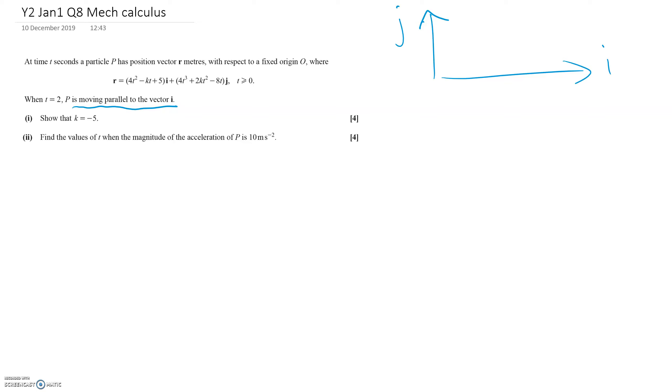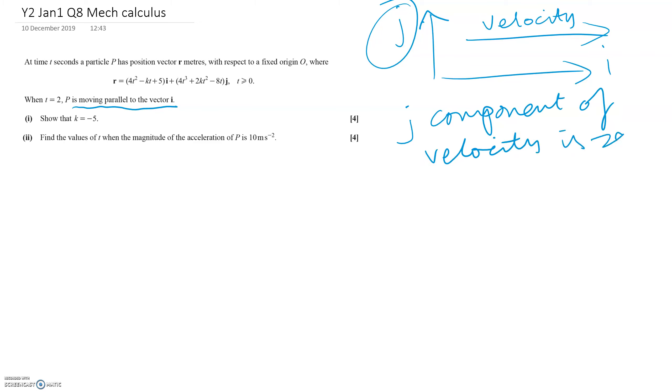In other words, its velocity is in this direction, which means the velocity has no J component. So the J component of velocity equals zero.